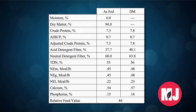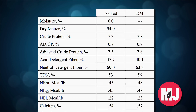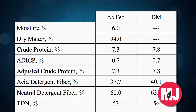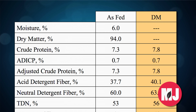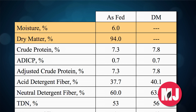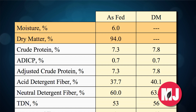I think it's real important that people recognize that most of the time they really need to pay most attention to the DM or the dry matter figures, because when they're trying to put together rations for their livestock, all of the requirements listed for the animals is going to be based on the dry matter content of the feed. When we have something that has a moisture level of six percent and the dry matter is 94 percent, you can see as you look down the column of numbers that all of the numbers in the two columns differ from one another because they're adjusting for that moisture.